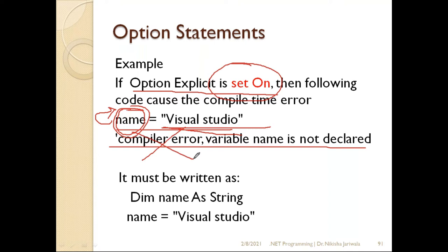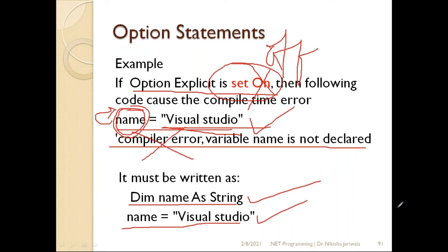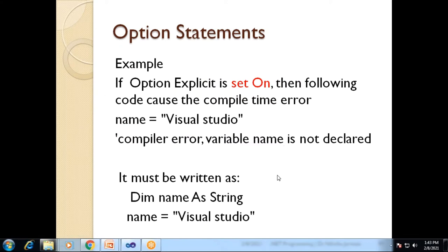To avoid that compilation error, you must first declare the name variable, and then you can assign a value to it. But if you set off instead of on, that particular statement will not give any error, because off means that without declaring the variable, you can use it within your code.